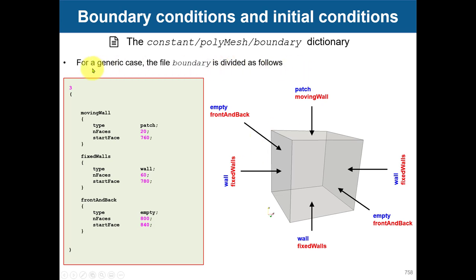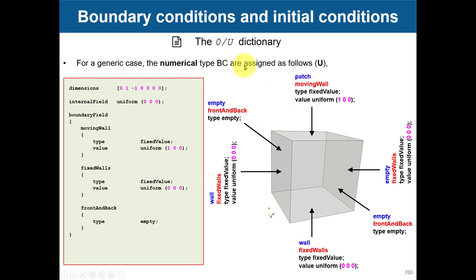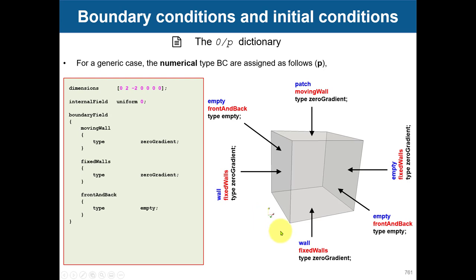Finally, in this hypothetical generated case, see that in the boundary file we give names like this — these are the names, and the base type is shown in blue: empty, patch, patch, wall. Then when you go into your numerical type boundary conditions — in this case for U and P — the blue one represents the base type in boundary. A patch can be many things; in this case it is fixedValue with a uniform value. See that you are using the same name throughout. NT is the same across all faces. Be careful: you need to have this matching between base type and numerical type, and also use the same name all over the files.